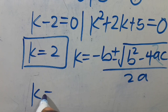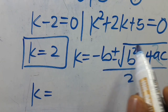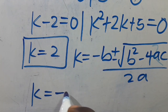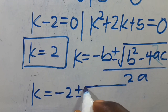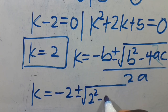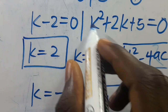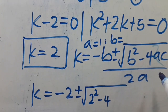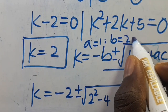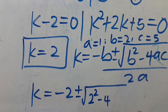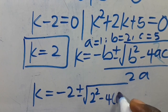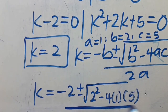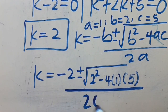From here, we have k equals minus 2, positive or negative, square root of 2 squared minus 4 multiplied by a. The coefficient of k squared is a equals 1, b is the coefficient of k which is 2, and c equals 5. So we have 4 multiplied by 1 multiplied by 5, divided by 2 multiplied by 1.